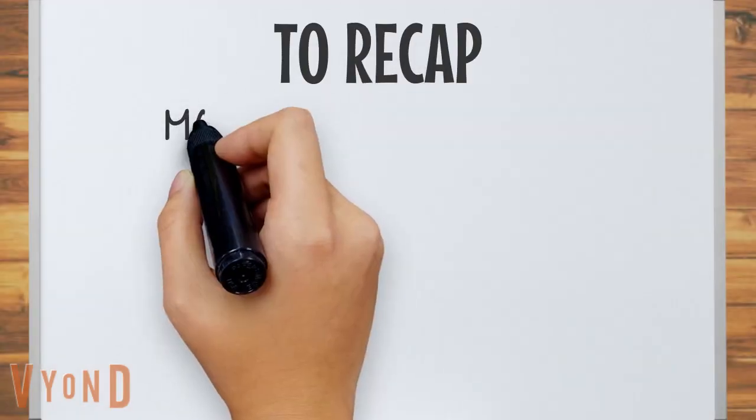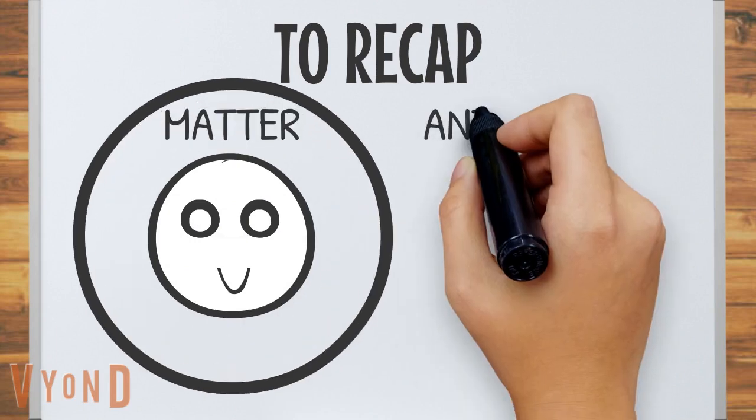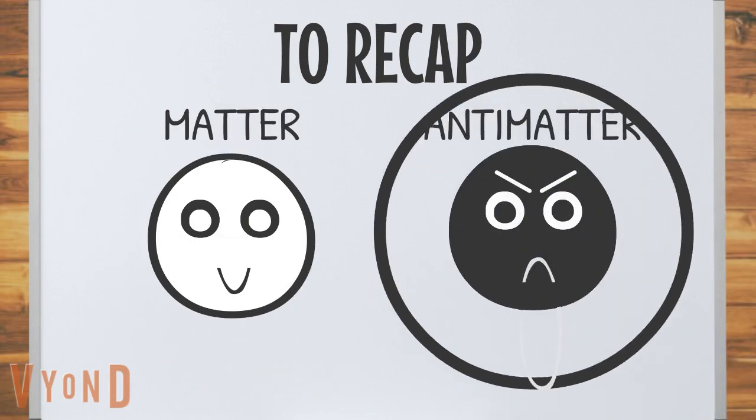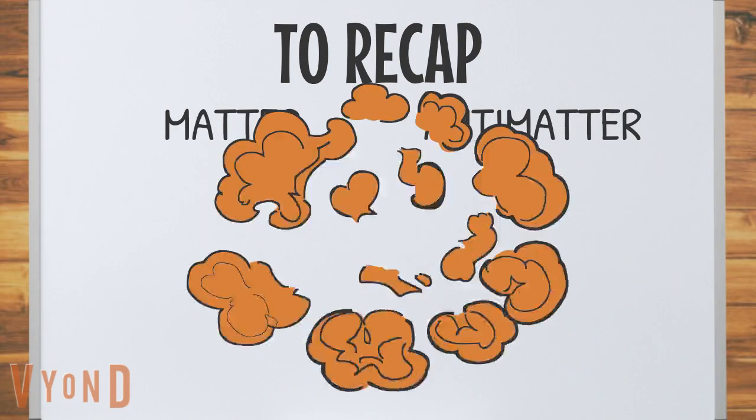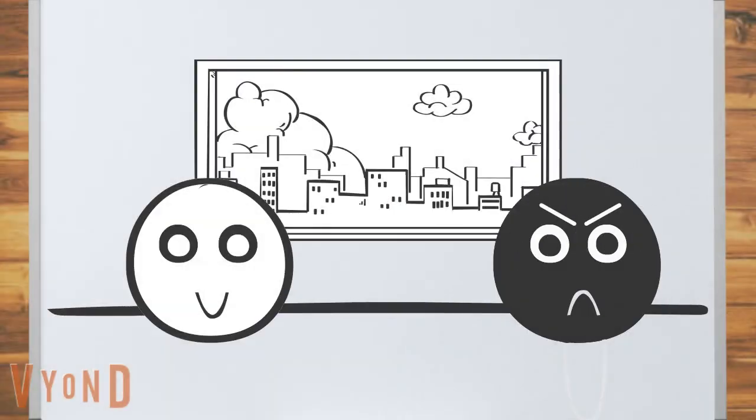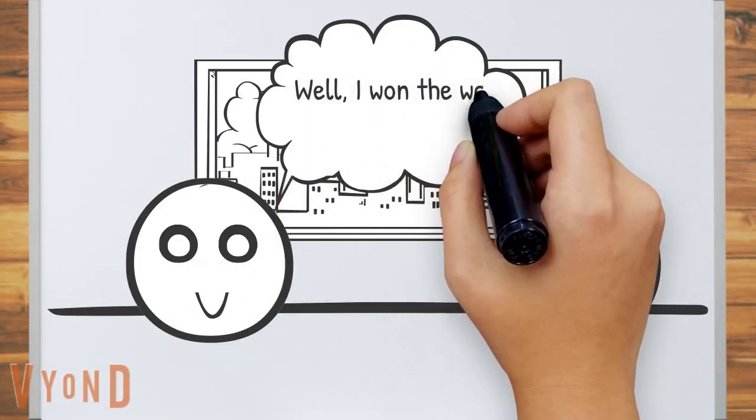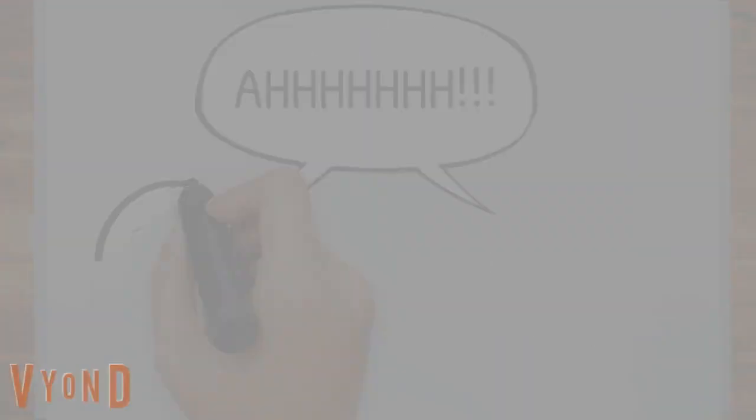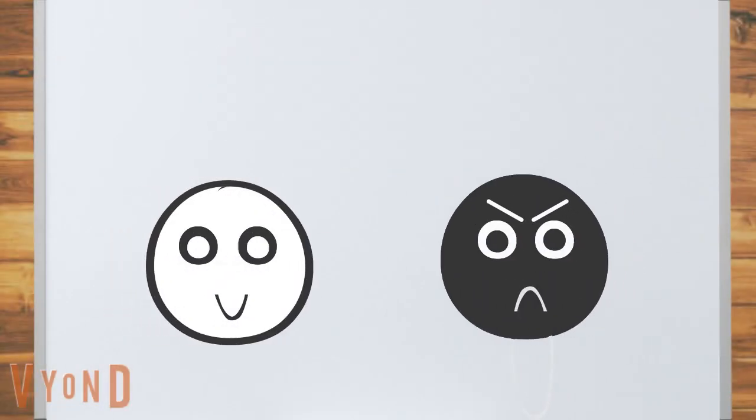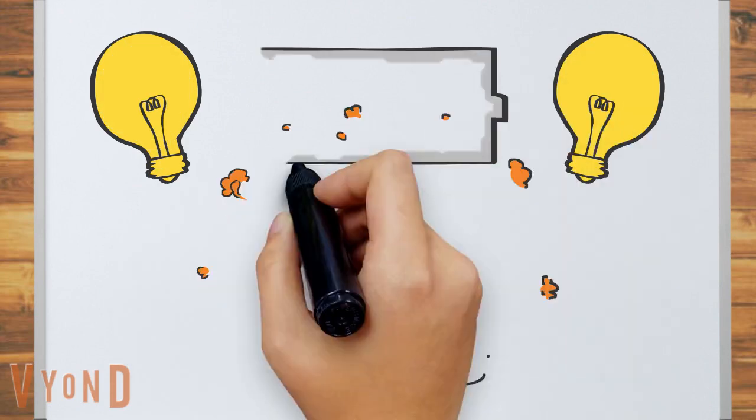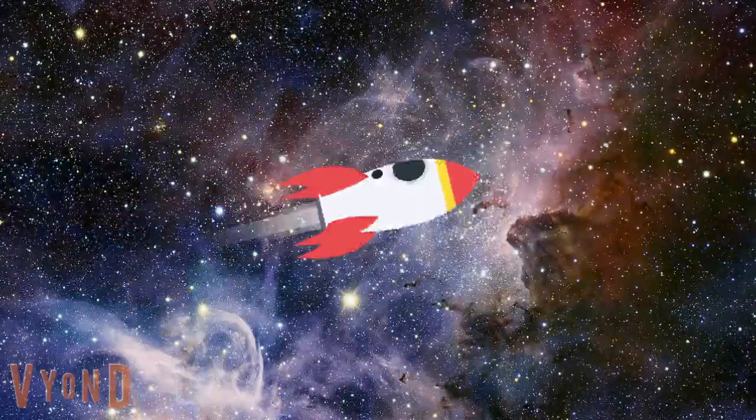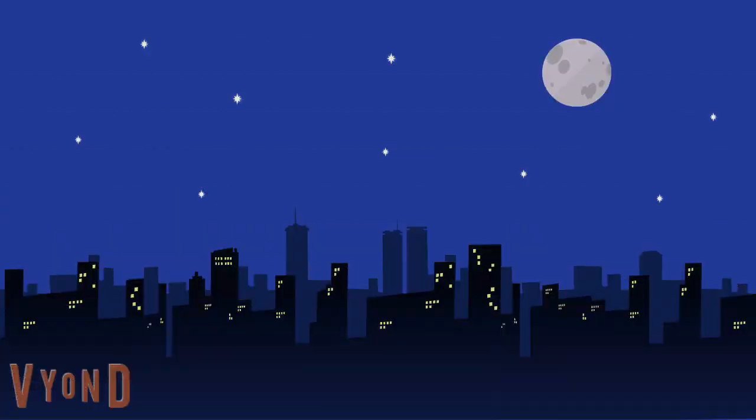So, to recap, matter has an angry identical twin named antimatter. They fight whenever they meet. Antimatter has a long-lasting grudge about the huge fight they had a few billion years ago. But when they fight, they create tons of energy that we can eventually use to explore the cosmos, and power our cities here at home.